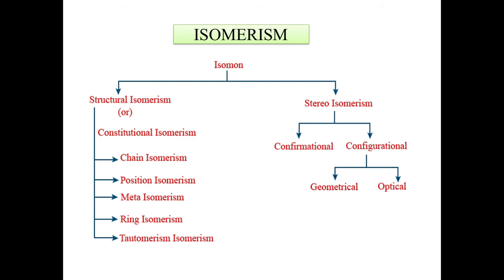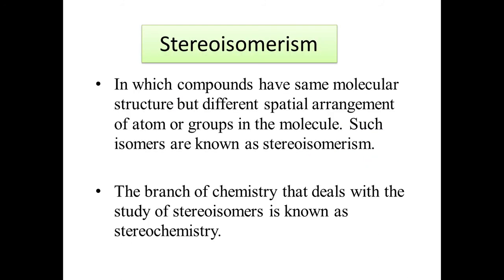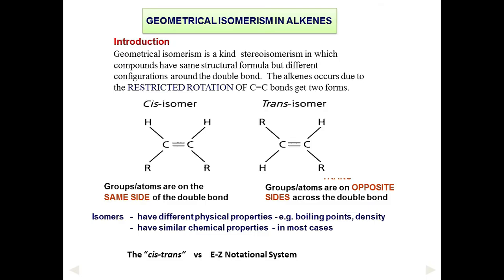Today I am focused only on stereoisomerism. What is stereoisomerism? Compounds that have the same molecular structure but different spatial arrangement of atoms or groups in the molecule — such isomerism is known as stereoisomerism. The branch of chemistry that deals with the study of stereoisomerism is known as stereochemistry.